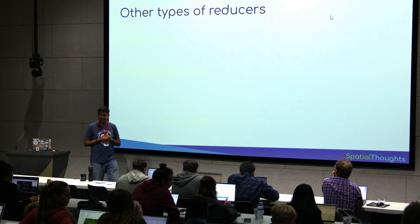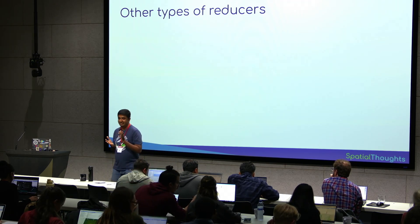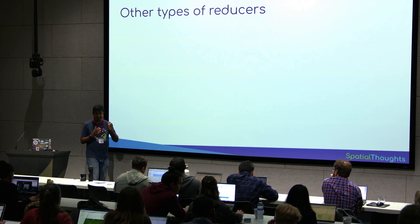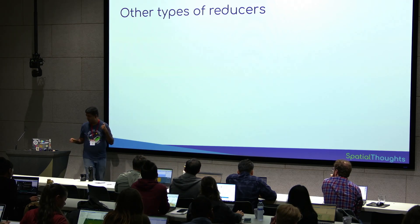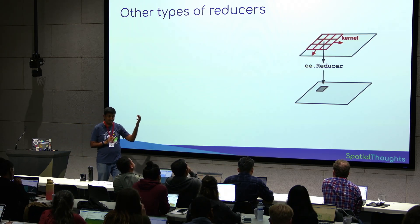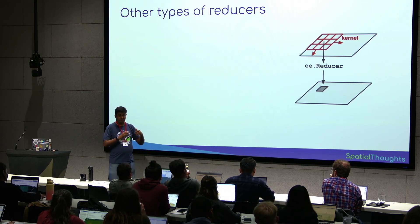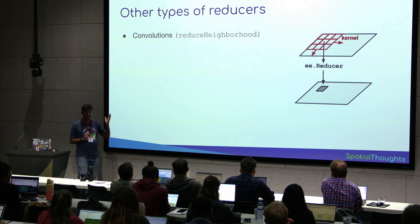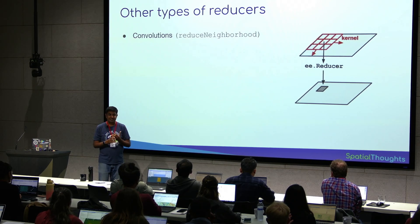In Earth Engine, everything is a reducer. If you are trying to implement your image processing workflow, it's likely that it's implemented as a reducer. So next time you don't know how to do something in Earth Engine, look under the reducer section. If you want to run a moving window operation — these are called kernel operations, or in remote sensing terminology, filters — if you want to apply a morphological filter or a high pass filter, they are implemented as reduce neighborhood. Essentially, you take a pixel, look at the neighborhood, and get a statistical summary.